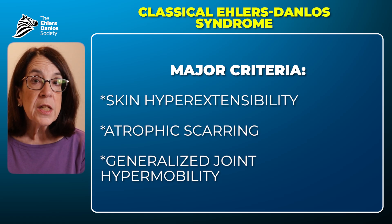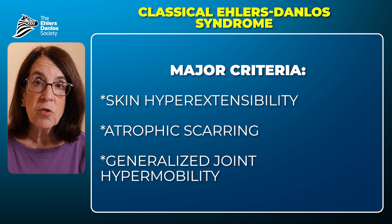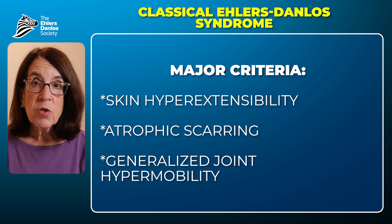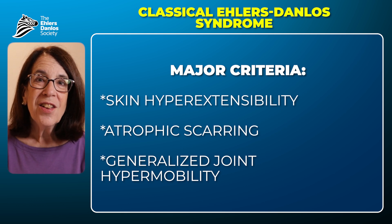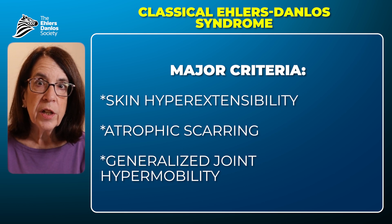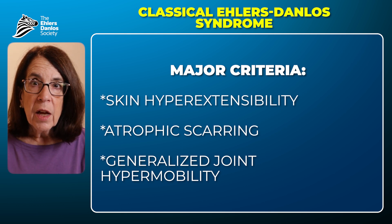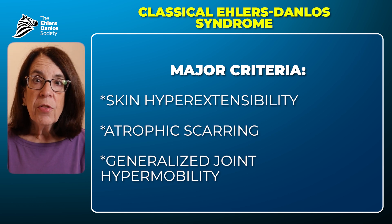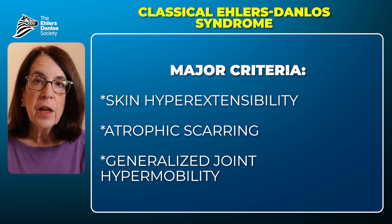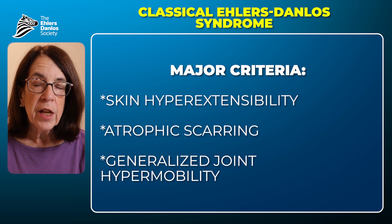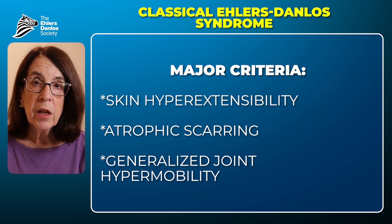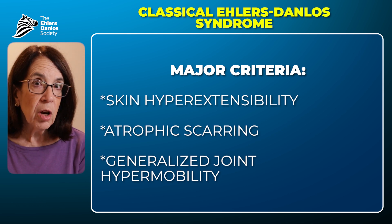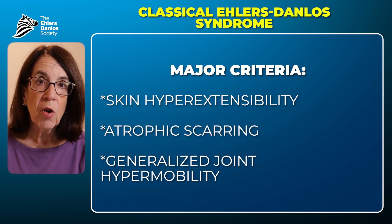We can make a clinical diagnosis of the classical type of Ehlers-Danlos Syndrome if a person has both skin hyperextensibility with atrophic scarring and generalized joint hypermobility. We can also make a clinical diagnosis if a person has one major criteria and three of the minor criteria — either skin hyperextensibility and atrophic scarring, or generalized joint hypermobility, as the major criteria.